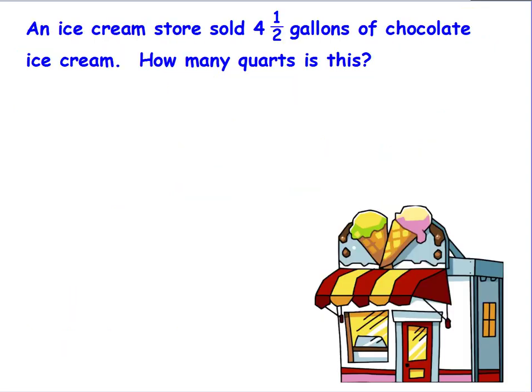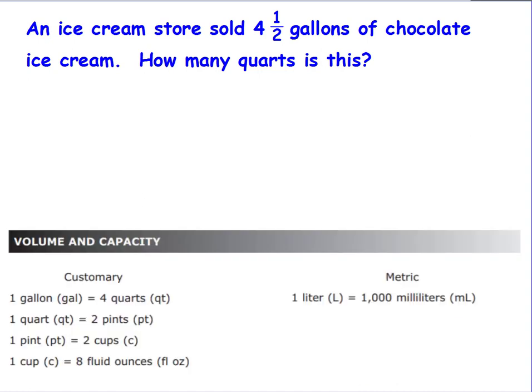Let's try another one. An ice cream store sold four and a half gallons of chocolate ice cream. How many quarts is this? I'm going to pull up my formula chart so you can see it. And I see here that I'm comparing gallons to quarts and there it is. I'm going to go up to my problem and make my word fraction. What is this problem asking me to compare? Gallons and quarts. Where does my question mark go? It goes next to the quarts because it says how many quarts. And it told me how many gallons. Now I'm going to write this as 4.5 instead of four and a half so it's easier. And the initial ratio I'm going to get straight off of the formula chart. I see that one gallon has four quarts.